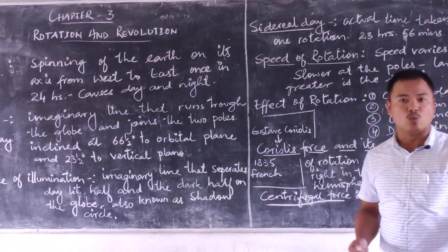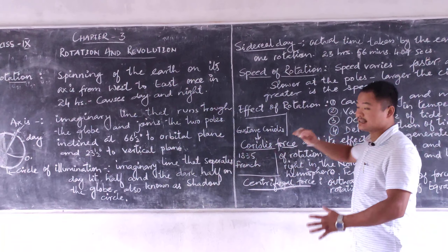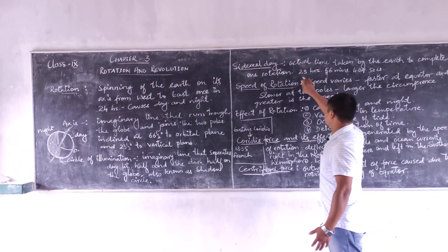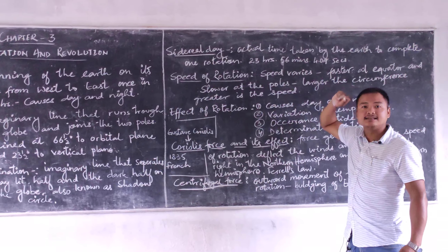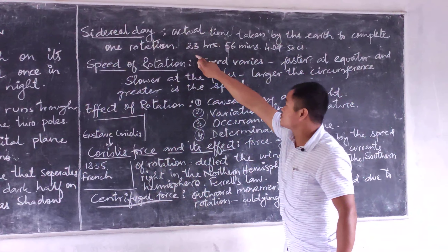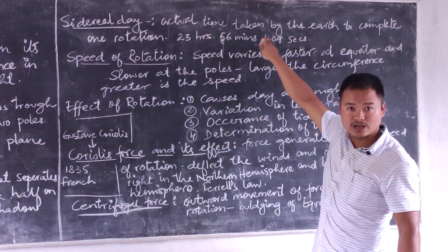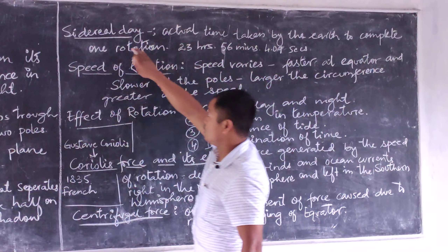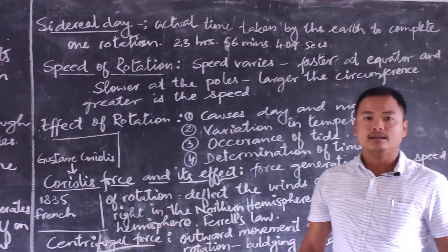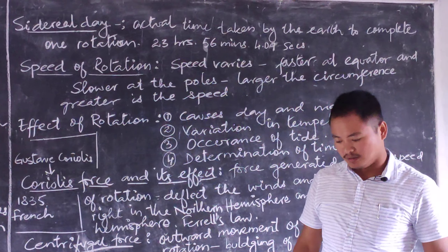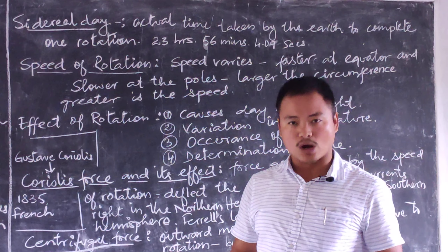The rotation of the earth takes 24 hours, which is considered one day, but the actual time is not exactly 24 hours — it is 23 hours, 56 minutes, and 4.09 seconds. This is the actual time taken by the earth to complete its rotation, and this is called the sidereal day. This rotation speed is not the same throughout the globe; it changes with latitude.